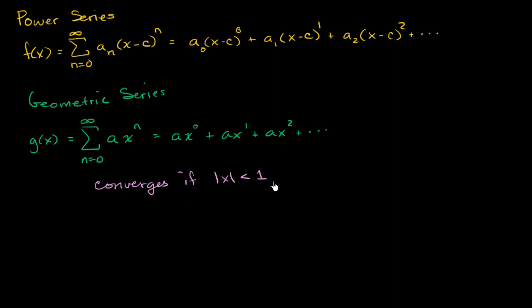So this converges if the absolute value of our common ratio is less than 1. Or another way of thinking about it, this is another way of saying that x is in the interval between, it's less than 1 and it is greater than negative 1. And this term right over here, now x is a variable. x can vary between those values. We're going to find a function in terms of x. We call this the interval of convergence.